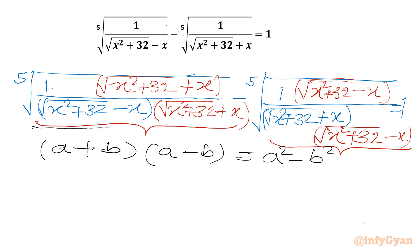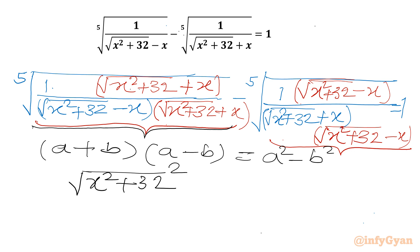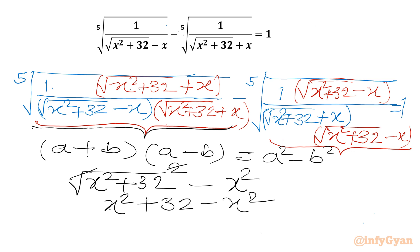So we can write our denominators as square root of x squared plus 32, whole squared — this is a squared minus b squared — so x squared. The square root and square cancel, and we write the denominator as x squared plus 32 minus x squared. Since x squared minus x squared cancels, our denominators become 32.